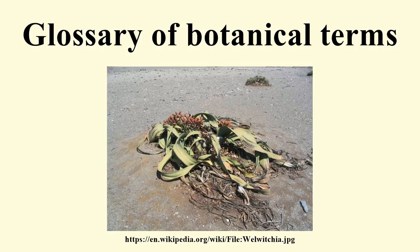See sexual reproduction in plants. Bitegmic: covered by two integuments. Bivalve: having two valves or hinged parts. Compare trivalve. Blade: the laminar or flattened part of a leaf, excluding the stalk. Bloom: a fine white or bluish waxy powder occurring on plant parts, usually stems, leaves and fruits; it is easily removed by rubbing. Bole: the trunk of a tree, usually below the lowest branch. Compare canopy.